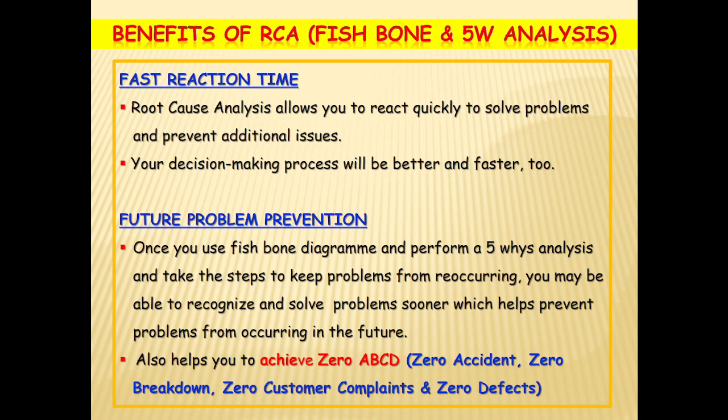Benefits of doing RCA: First, fast reaction time — root cause analysis allows you to react quickly to solve problems and prevent additional issues, and your decision-making process will be better and faster. Next, future problem prevention — once you use the fishbone diagram and perform a 5-Why analysis and take steps to keep problems from recurring, you may be able to recognize and solve problems sooner. This also helps to achieve zero ABCD: zero accidents, zero breakdowns, zero customer complaints, and zero defects.